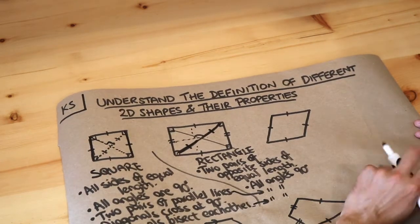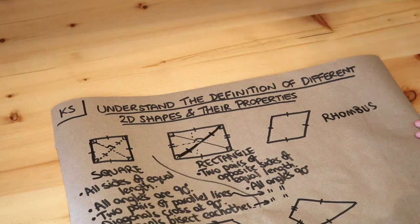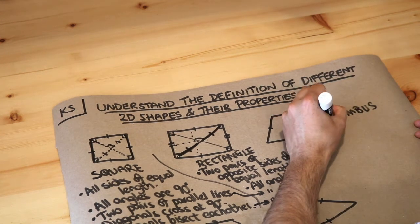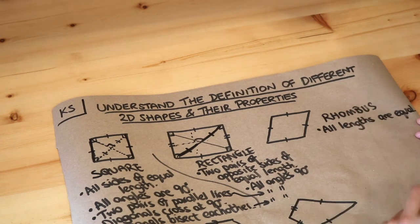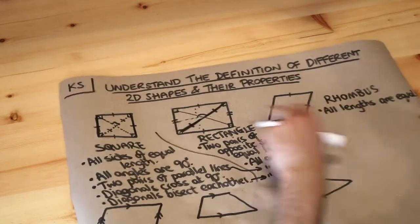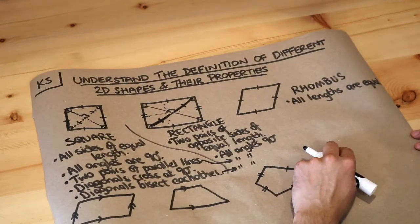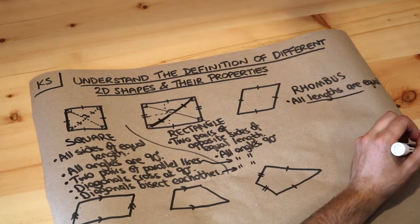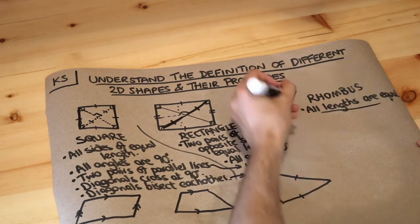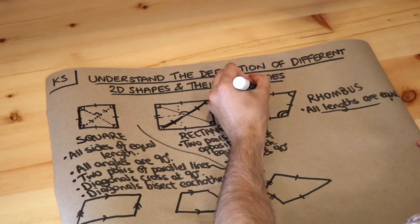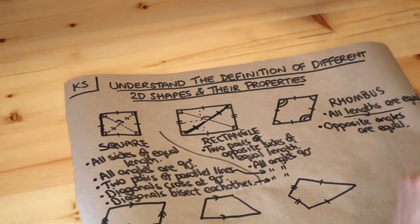What about this shape? It's known as a rhombus. The definition of a rhombus is a quadrilateral where all the sides are equal — all lengths are equal, and that's what makes a rhombus a rhombus. A square is actually an example of a rhombus, but rhombuses in general don't have to have right angles. Additionally, opposite angles are equal: this angle equals that angle, and this angle equals that angle.